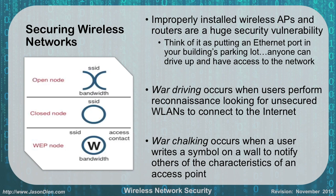There's a thing called war driving, which occurs when people drive around looking for unsecured wireless networks. If they find one, they'll sometimes do what's called war chalking — writing symbols on a wall or telephone pole near that building to tell others the characteristics of the access point they found. For example, an open node might be marked with backward C symbols showing the SSID and bandwidth. If someone finds your unsecured home network, other hackers may use it as a jumping-off point for illegal activity — and you'll be the one who gets caught.